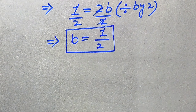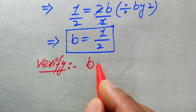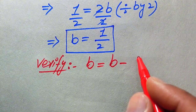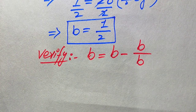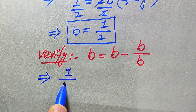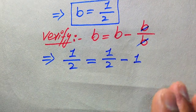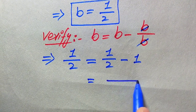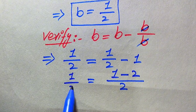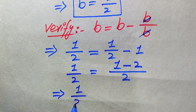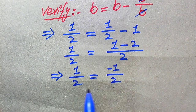Next we verify whether b equals 1/2 is a solution or an extraneous root. Substituting into the original equation b = √(b minus b/b): the left side gives 1/2. On the right side, b/b cancels to 1, so we get √(1/2 minus 1). Taking LCM on the right gives √((1 minus 2)/2) = √(−1/2). The left side is positive and the right side is negative, so they are not equal.